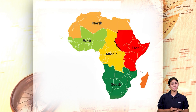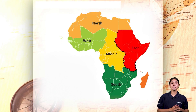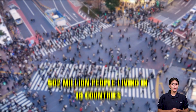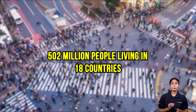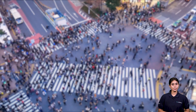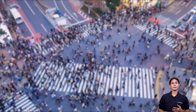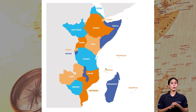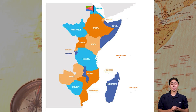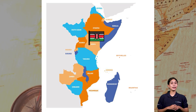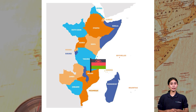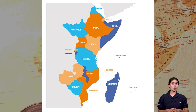Now let us know about the countries of Eastern Africa. Eastern Africa, a sub-region of Africa, has over 502 million people living in 18 countries. These countries are Burundi, Comoros, Djibouti, Eritrea, Ethiopia, Kenya, Madagascar, Mozambique, Malawi, Mauritius, Rwanda.